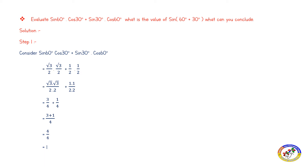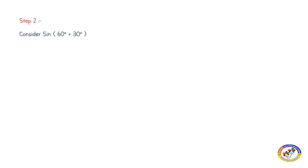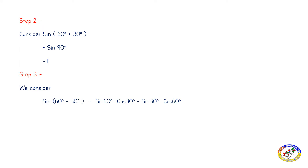So sine 60 cos 30 plus sine 30 cos 60 equals 1. Now step two: sine 60 plus 30. Step one answer is 1, and step two sine 60 plus 30 is equal to sine 60 cos 30 plus sine 30 cos 60.